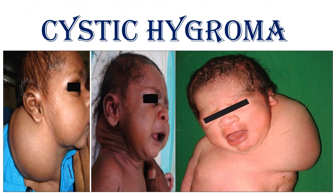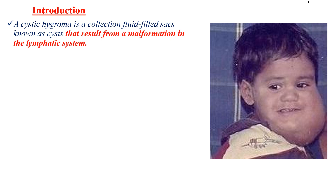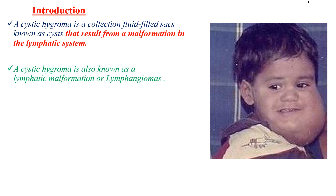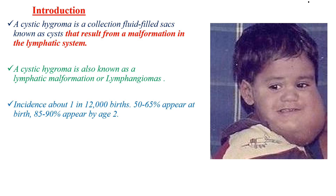Cystic Hygroma. A cystic hygroma is a collection of fluid-filled sacs that results from a malformation in the lymphatic system. It is also known as a lymphatic malformation or lymphangioma — these terms can be used interchangeably. The incidence is around 1 in 12,000 births, and around 50–65% appear at birth, while around 85–90% appear by age 2.